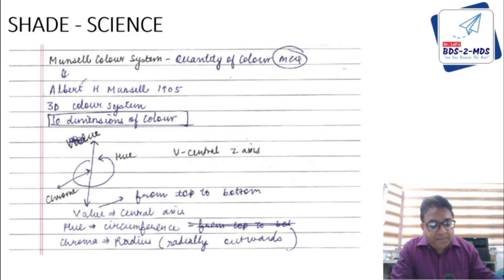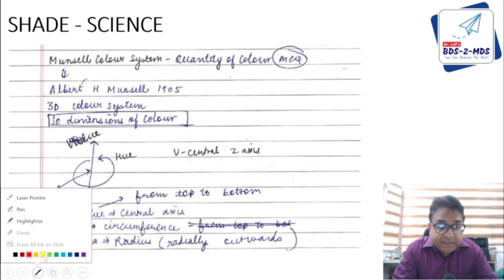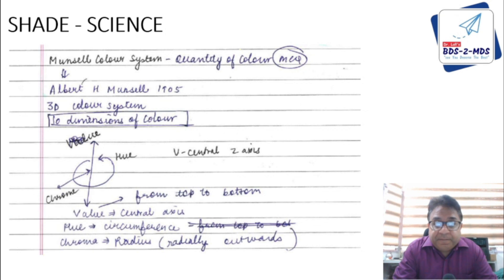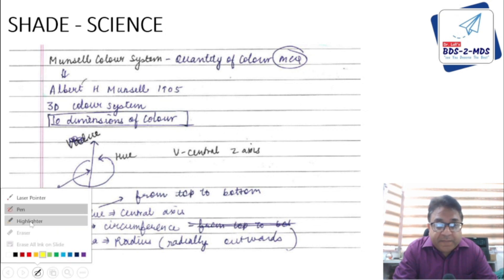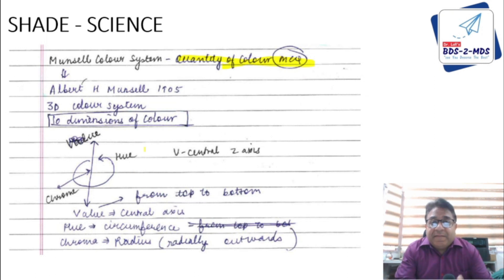Shade science — the Munsell color system. It is a three-dimensional color system where you can measure the quantity of color. It was given by a scientist called Albert Munsell. It is three-dimensional and has three dimensions: hue, value, and chroma.